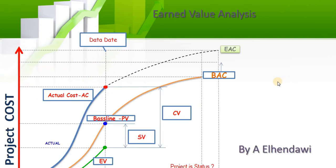Here is a summary of earned value — it is very easy. I have plotted three curves: the blue one is the actual cost, with a projection going forward to the estimate at complete; the second line is your baseline, which is the planned value; and the last one is the earned value. You can see that on this project the actual is higher than the planned and also higher than the earned value. The SCV is the difference between planned and earned, and the CV is the difference between actual cost and earned. At the end you can also see the estimate at complete and the budget at complete, which comes from the baseline.